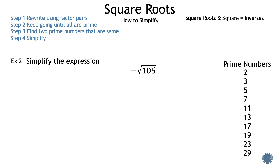Let's move on to example 2. Simplify the expression negative square root of 105. The first step is to find a factor pair of 105 — two numbers that multiply to 105. The factor pair we'll use is 3 and 35, since 3 is the next prime number. Note that using 5 and 21 would give the same answer. We'll continue with 3 and 35.